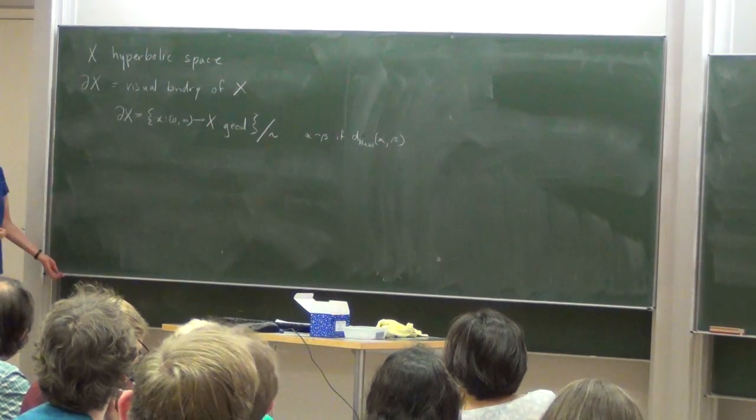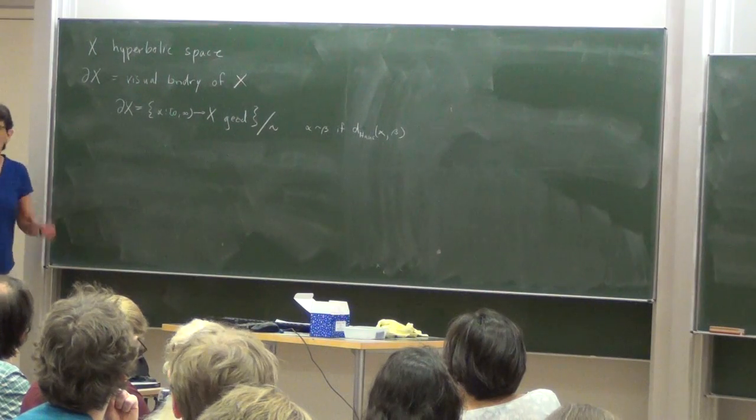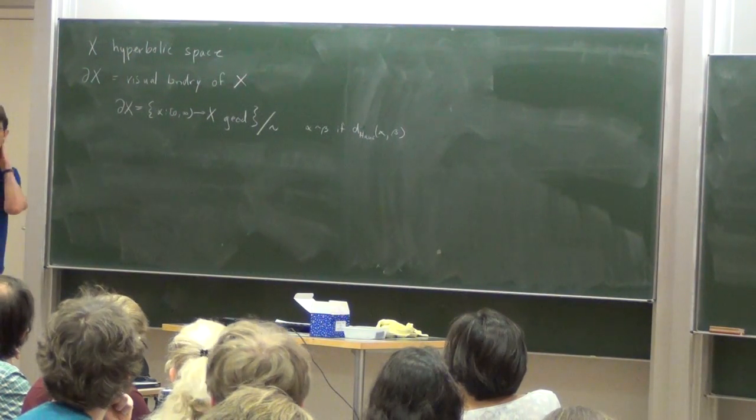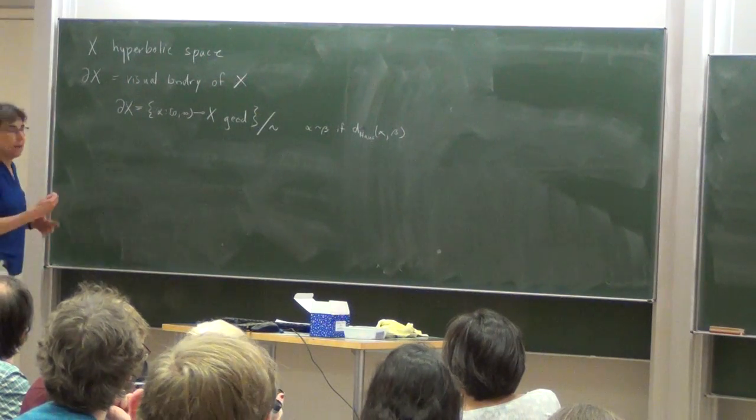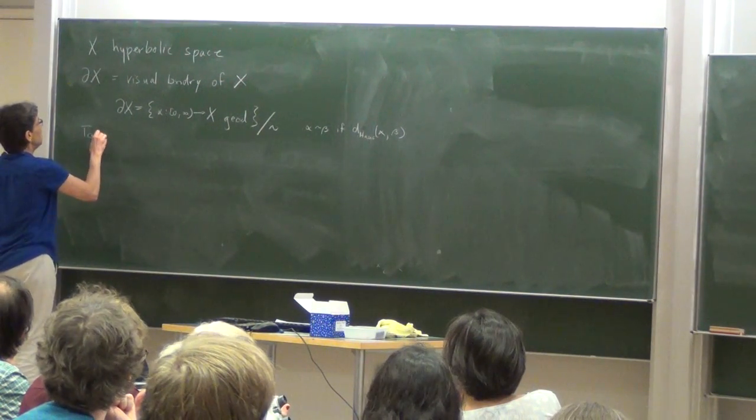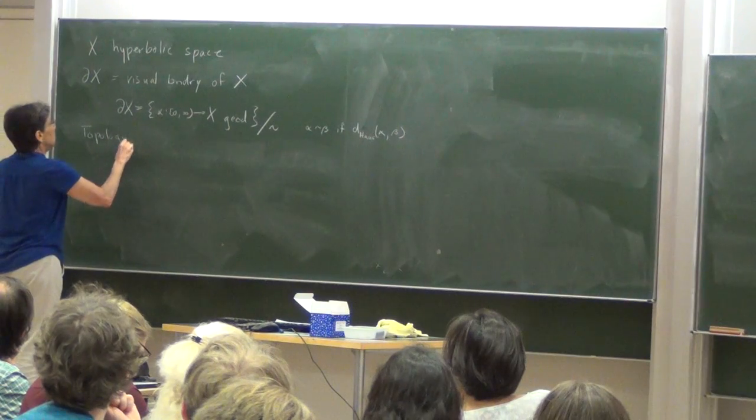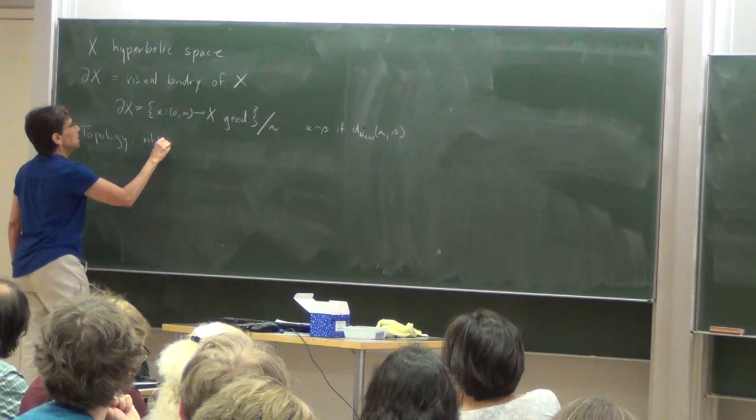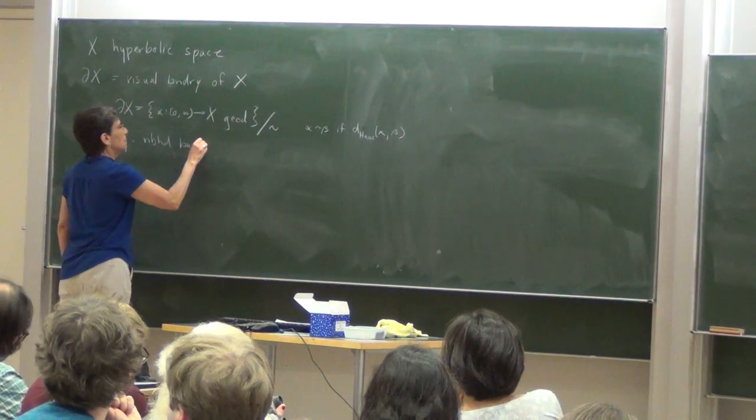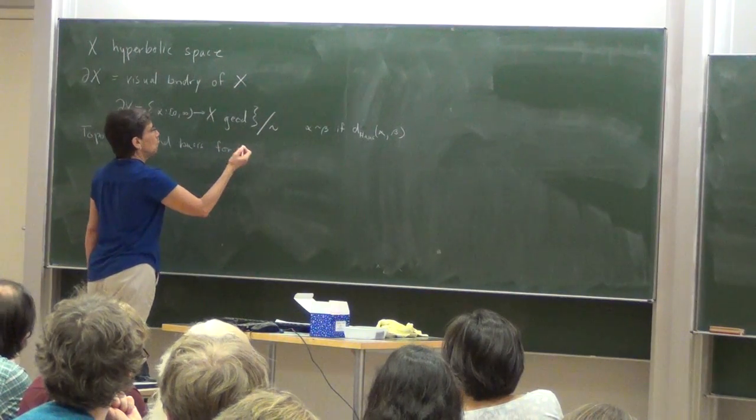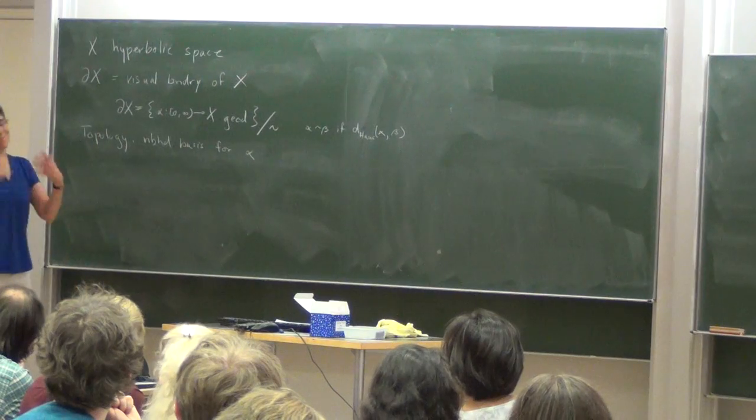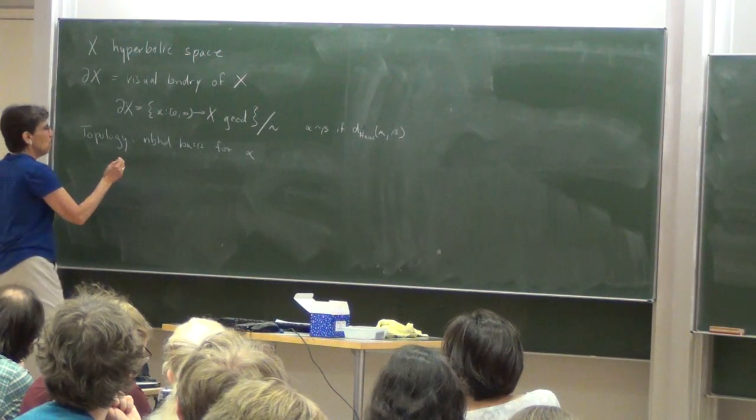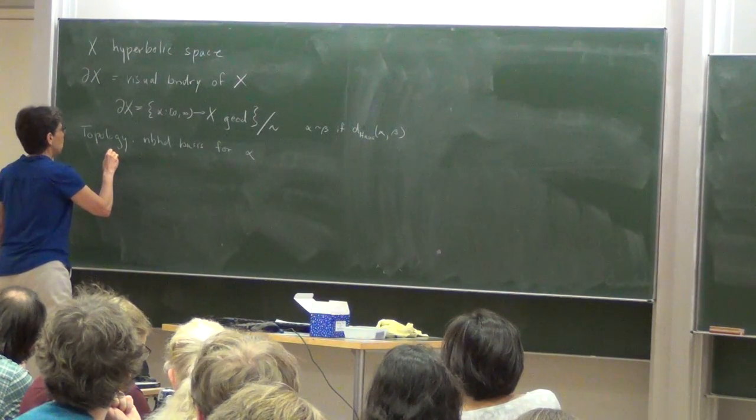So that's what it is as a set. We're also going to be talking a little about the topology. There are several ways to define the topology. I'd like to define it in terms of a neighborhood basis. So there's one way to define the topology as follows. I'm going to tell you a neighborhood basis.